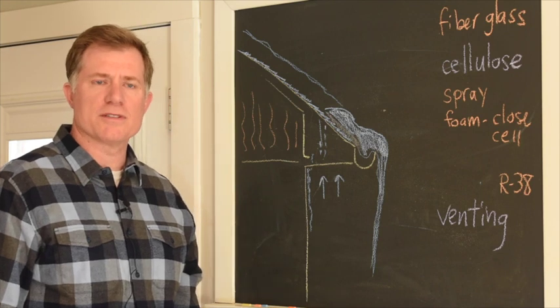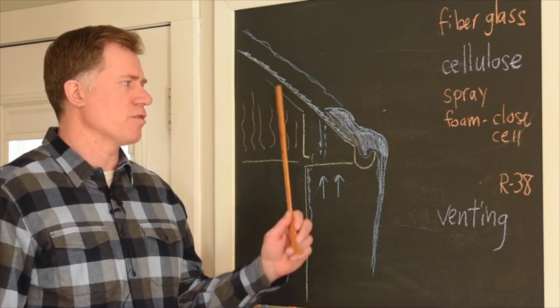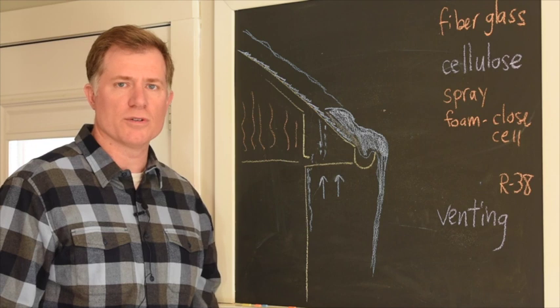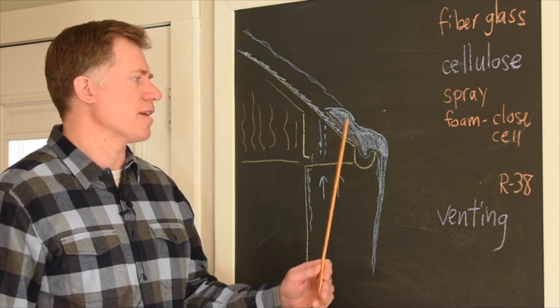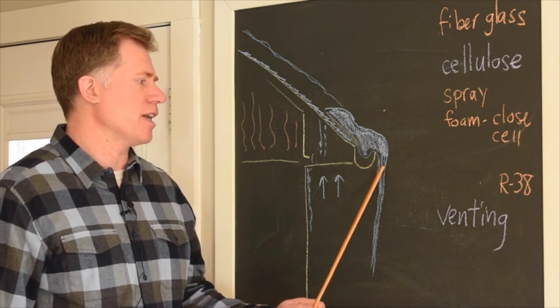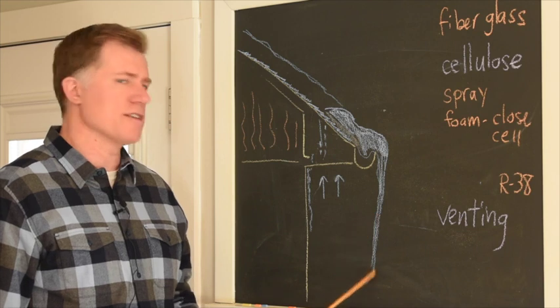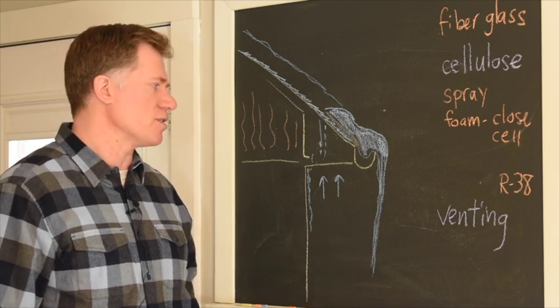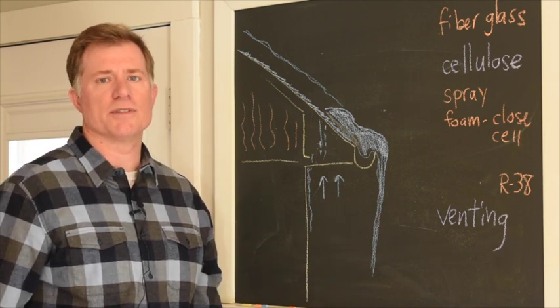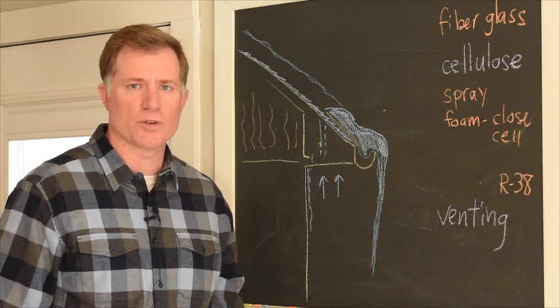During the wintertime we see a lot of these ice dams cropping up with the wet weather we've had, the extreme cold and a lot of snow. You'll notice ice dams with ice buildup on the edge of a roof and a lot of times long icicles coming down. You see those in every neighborhood, and that's an indication of an issue with your insulation or venting.